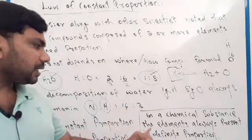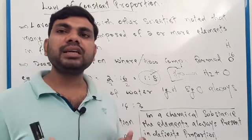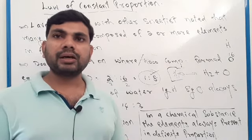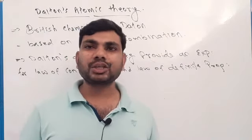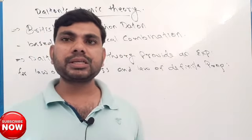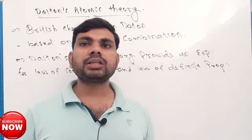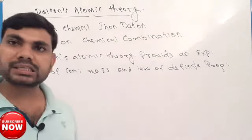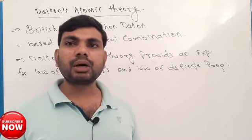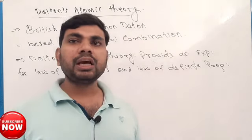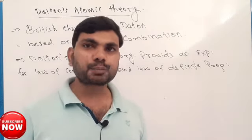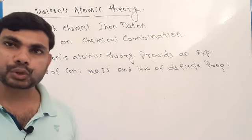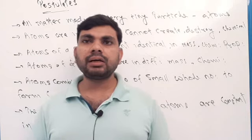The law of definite proportion states that in a chemical substance, the elements are always present in a definite proportion. Dalton's atomic theory was established by British chemist John Dalton, based on the law of chemical combination. Dalton's atomic theory helps to explain the law of conservation of mass and the law of definite proportion.